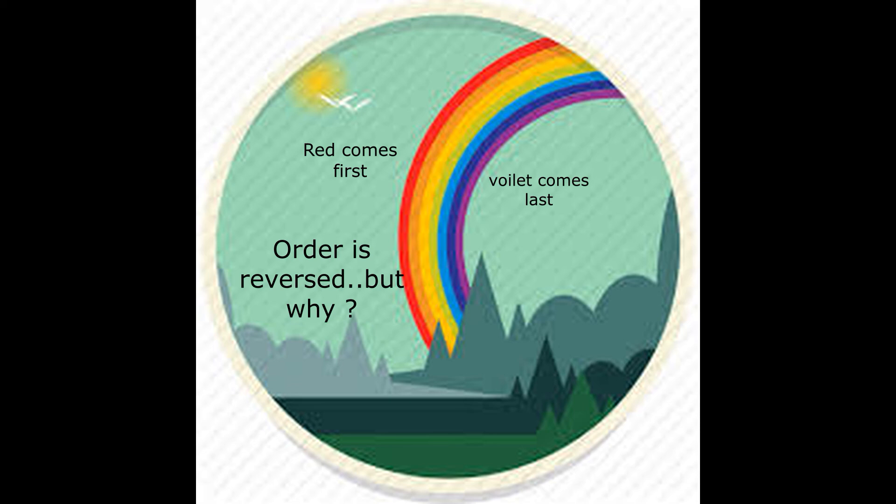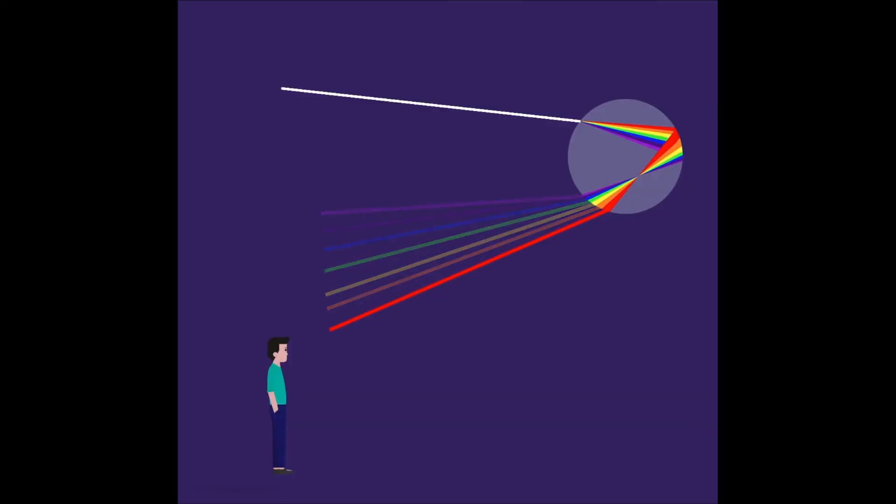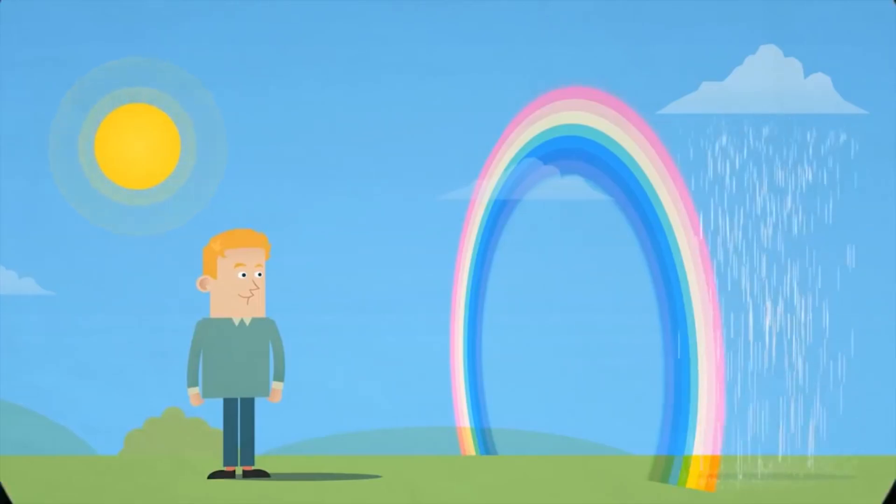But then why is that we see red first? This is because all the other colors apart from red are above our line of sight. And the same way we see violet in the bottom and not the rest as all the other colors are not visible to us. And we see the rest of the colors the same way we see red and violet.